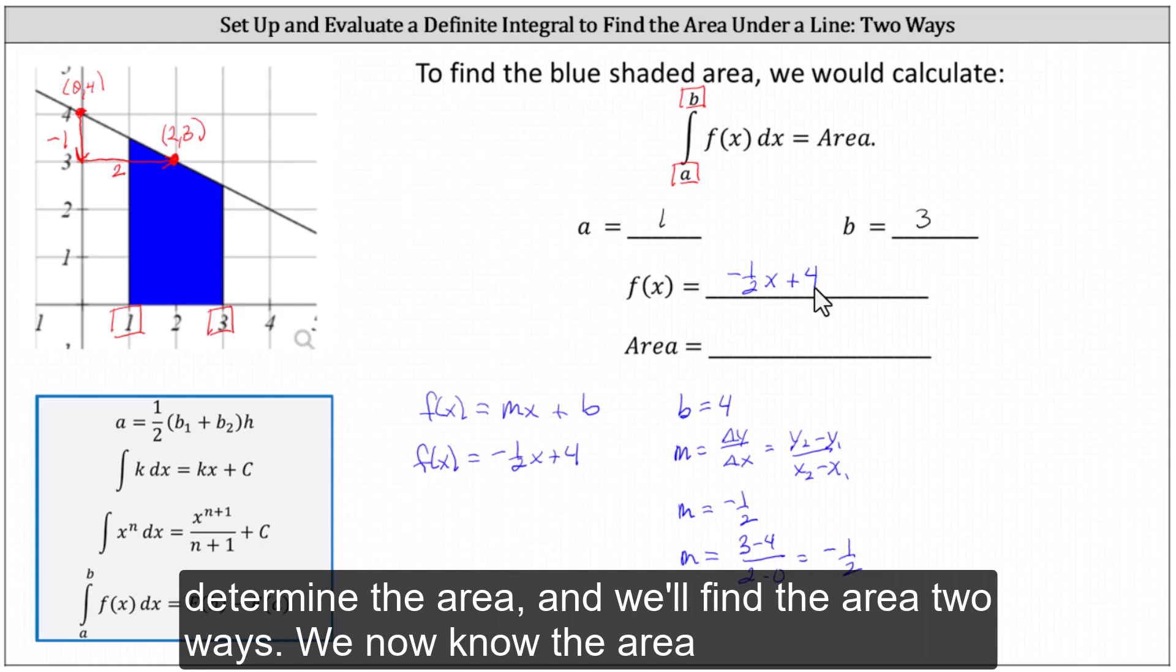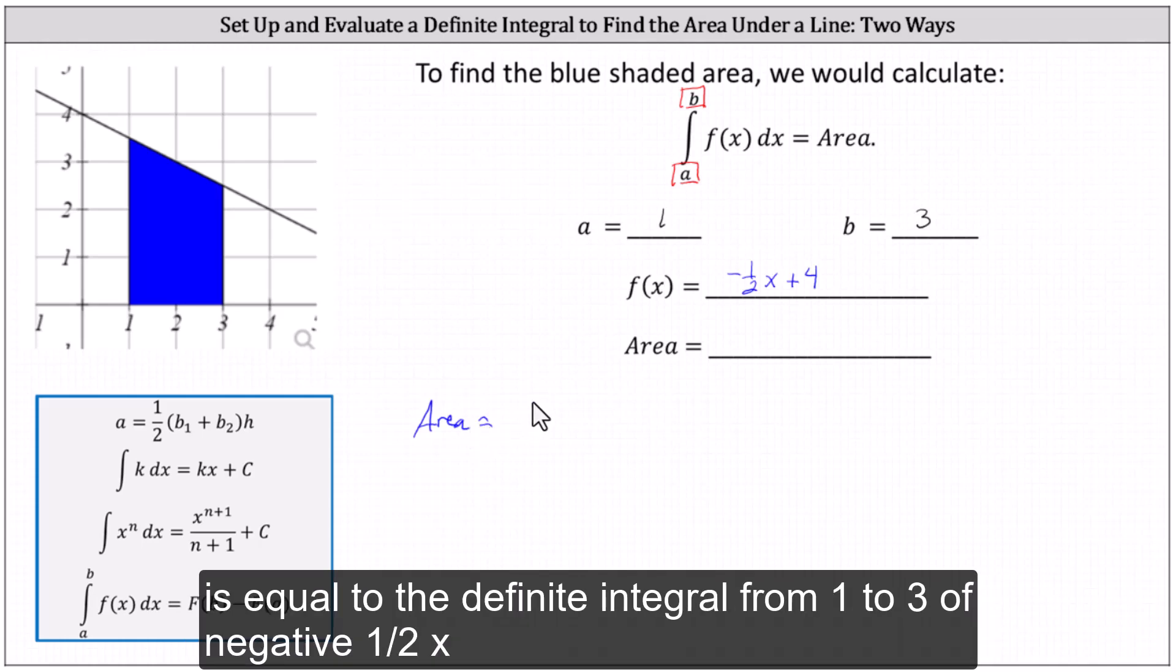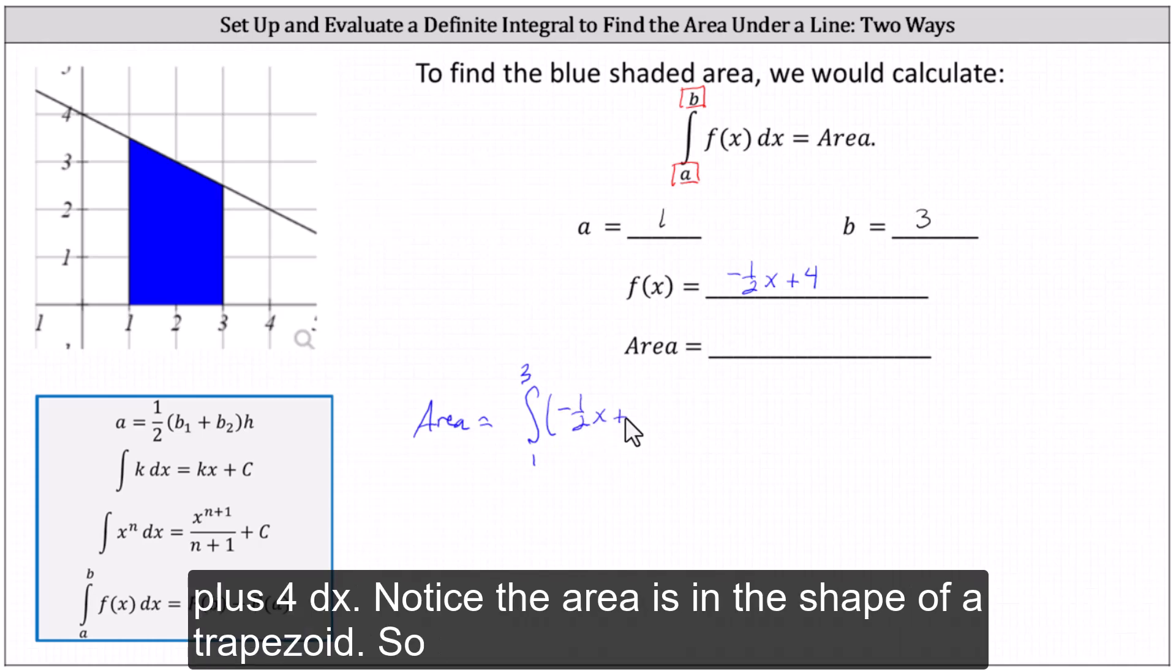And now let's determine the area, and we'll find the area two ways. We now know the area is equal to the definite integral from one to three of negative one-half x plus four dx.